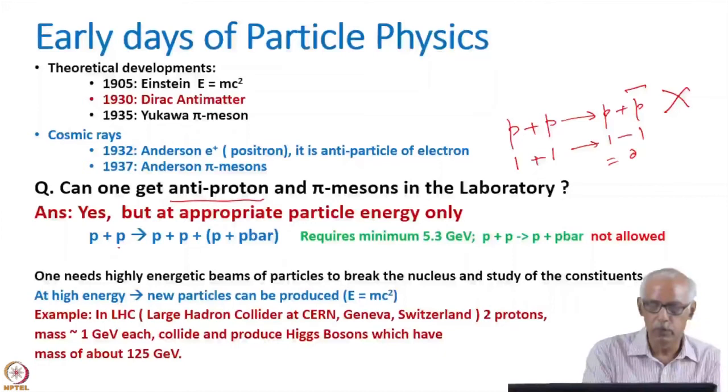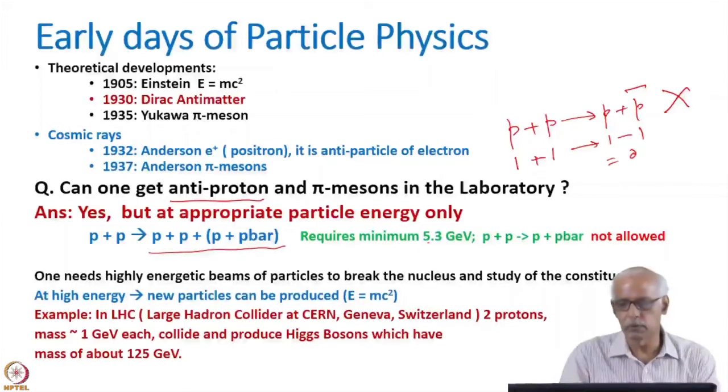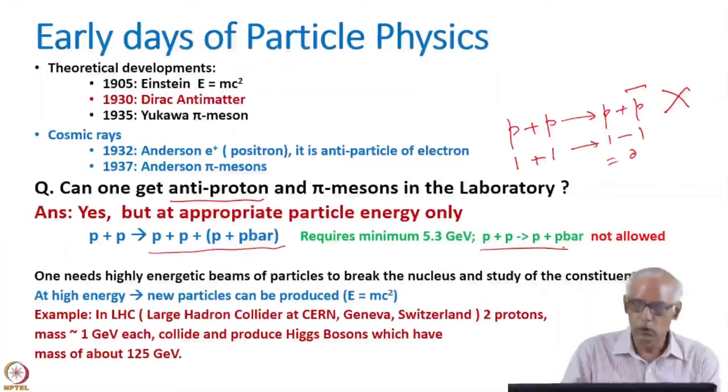That is why we have two protons collisions and then you can have these four particles. Now, if you want to have these four particles, then the energy conservation says that you need higher energy. That is why this anti-proton is created at a minimum energy of about 5.3 GeV. So one needs highly energetic beam of particles to break the nucleus and study the constituents. That is a fundamental thing. At high energy, new particles can be produced.